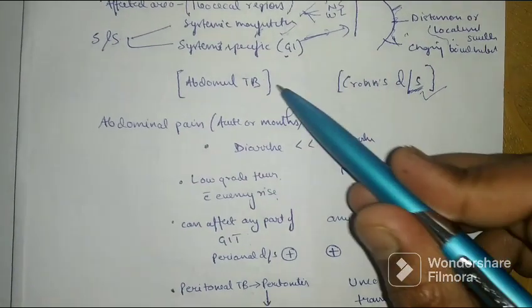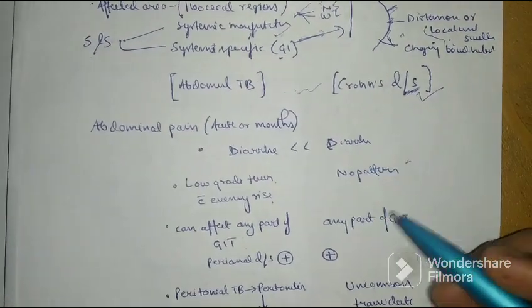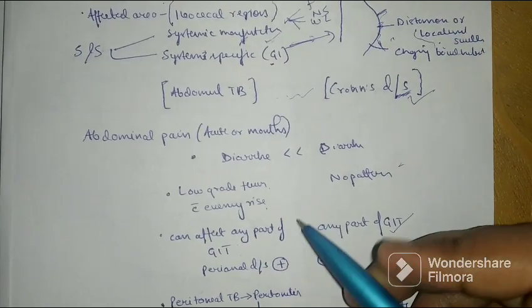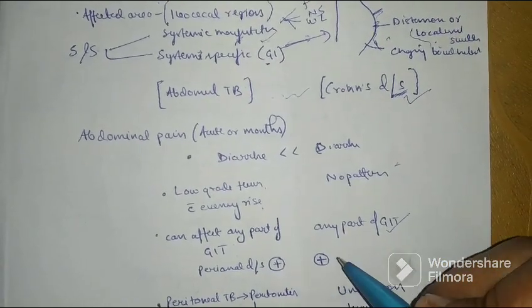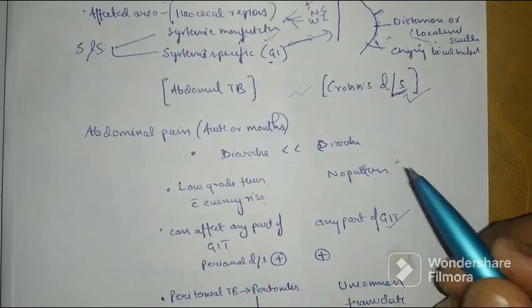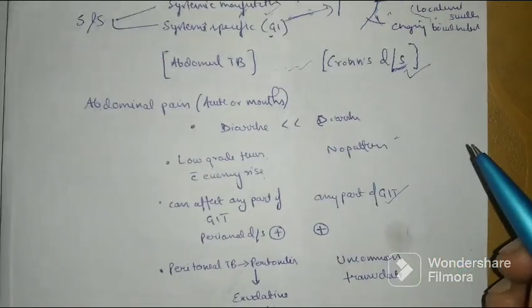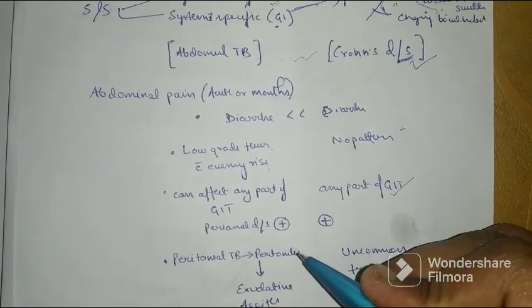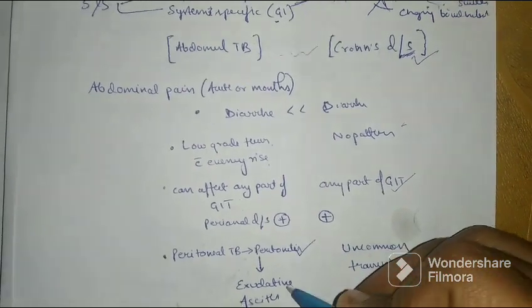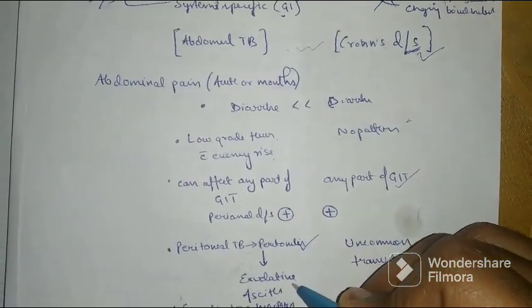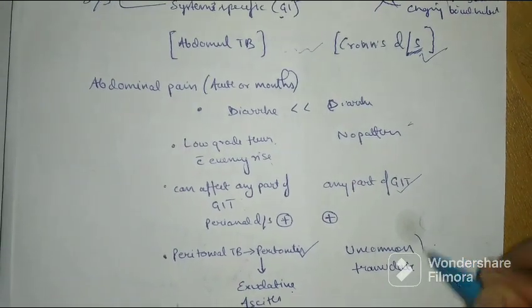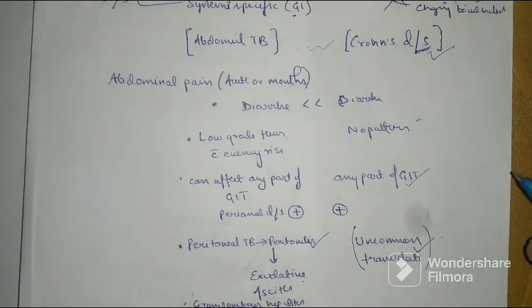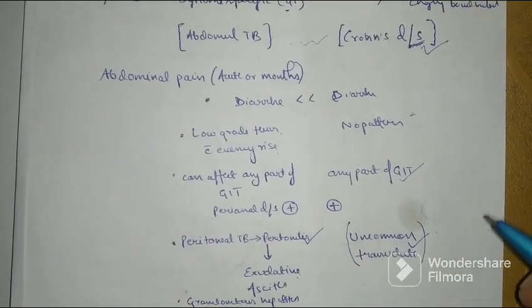Similarly, Crohn's disease and abdominal TB can both involve any part of GIT and peritoneal disease can occur in both TB, abdominal TB as well as Crohn's disease. Peritoneal TB in case of abdominal TB can result in peritonitis that will lead to an exudative ascites, whereas in case of Crohn's disease the ascites is uncommon, very uncommon, and if present can lead to a transudate ascites.